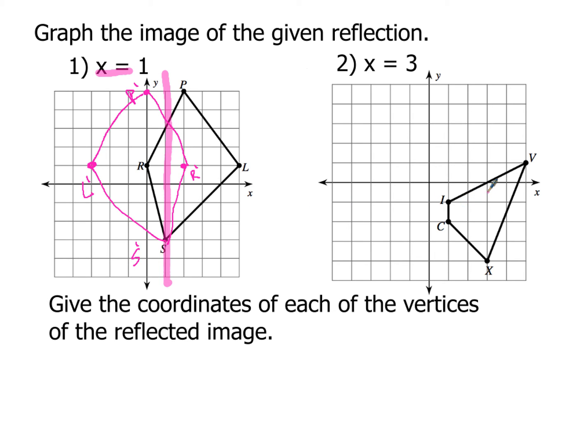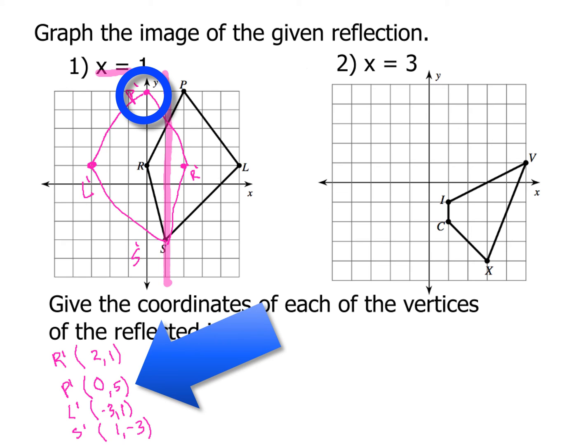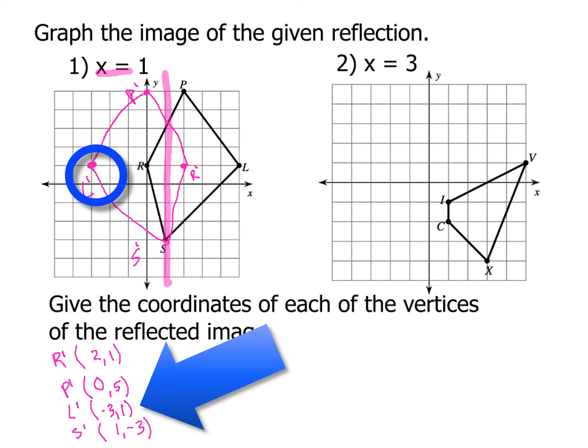So that would be the image of the quadrilateral P, R, S, L, reflected about the line x equals one. Now to give the coordinates of each of the vertices, you can go ahead and write those down here. And we'll just start that with R. So R prime will have the coordinates two, one. P prime will have the coordinates zero, five. L prime will have the coordinates negative three, one. And S prime will have the coordinates one, negative three.